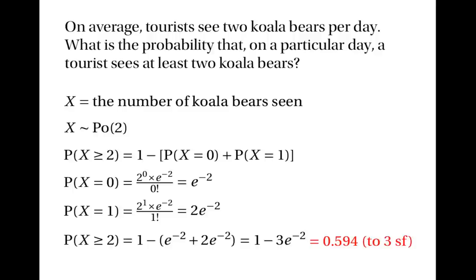Before moving on, it's worth noting this koala example only works if we assume koalas occur one at a time and independently, so the presence of one koala doesn't increase or decrease the probability of finding another nearby.